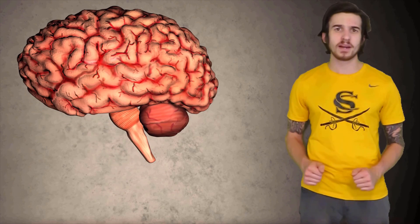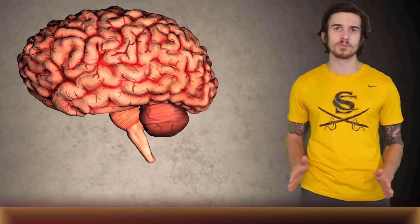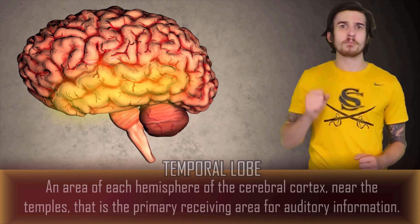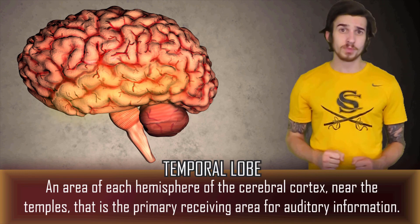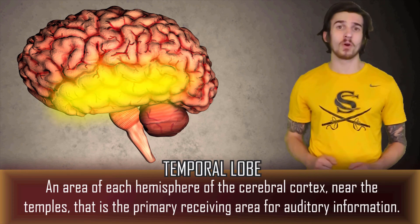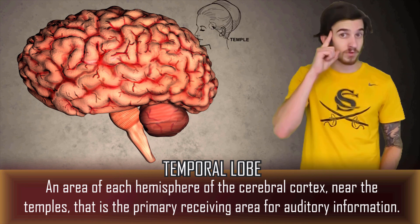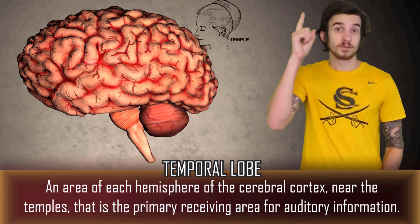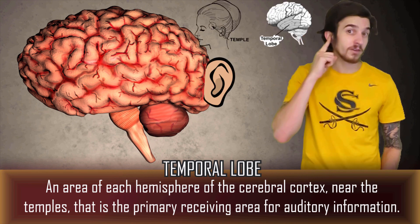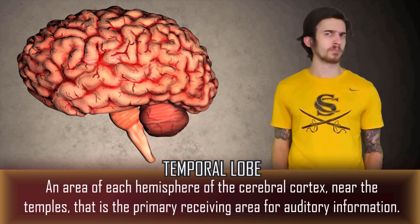Each cerebral hemisphere can be divided into four different regions or lobes. Located near the temple, the temporal lobe serves as the primary processing area for auditory information. This should be an easy one to remember — temple, temporal, ear, hearing.